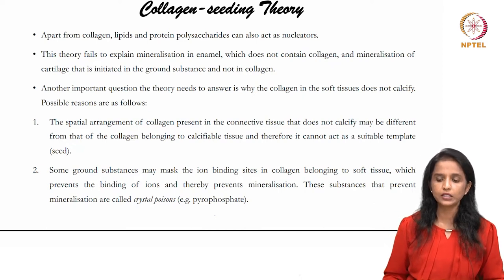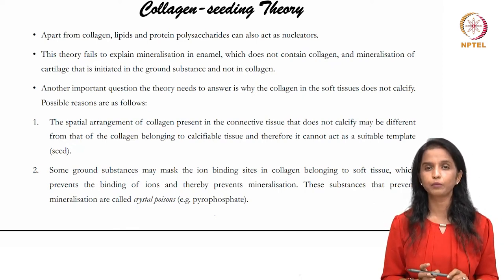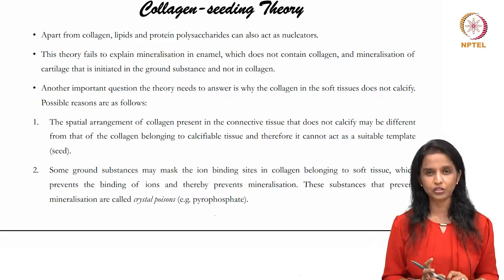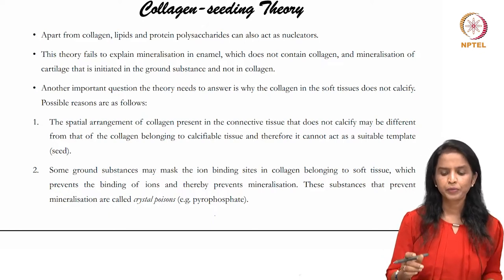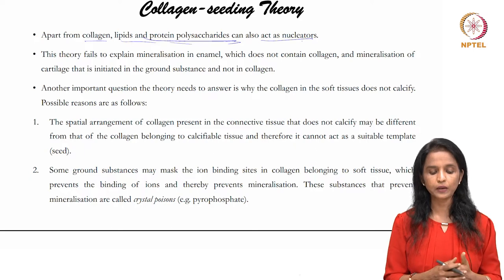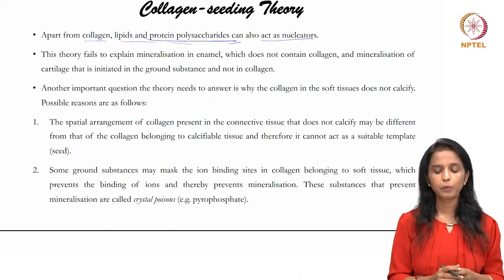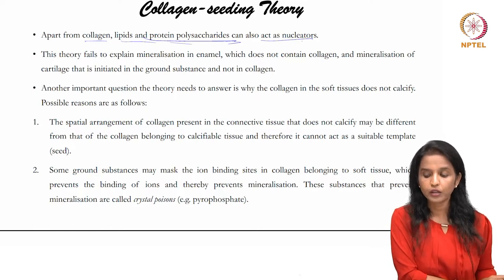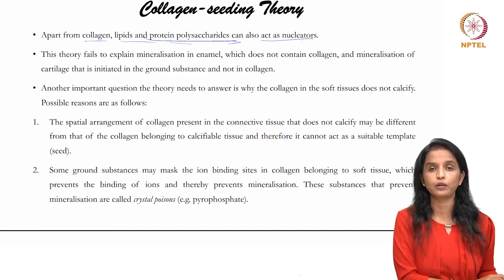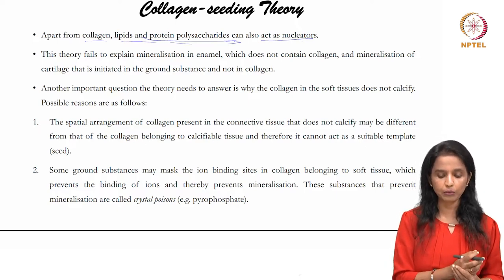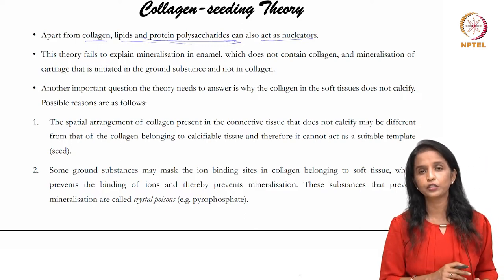The collagen seeding theory recognizes that type I collagen is the most important organic component of mineralized tissues. In this theory, collagen, lipids, and protein polysaccharides all act as nucleators. However, this theory fails to explain mineralization in enamel, because enamel has no collagen at all. All other hard tissues — bone, dentine, and cementum — contain type I collagen, but enamel does not.